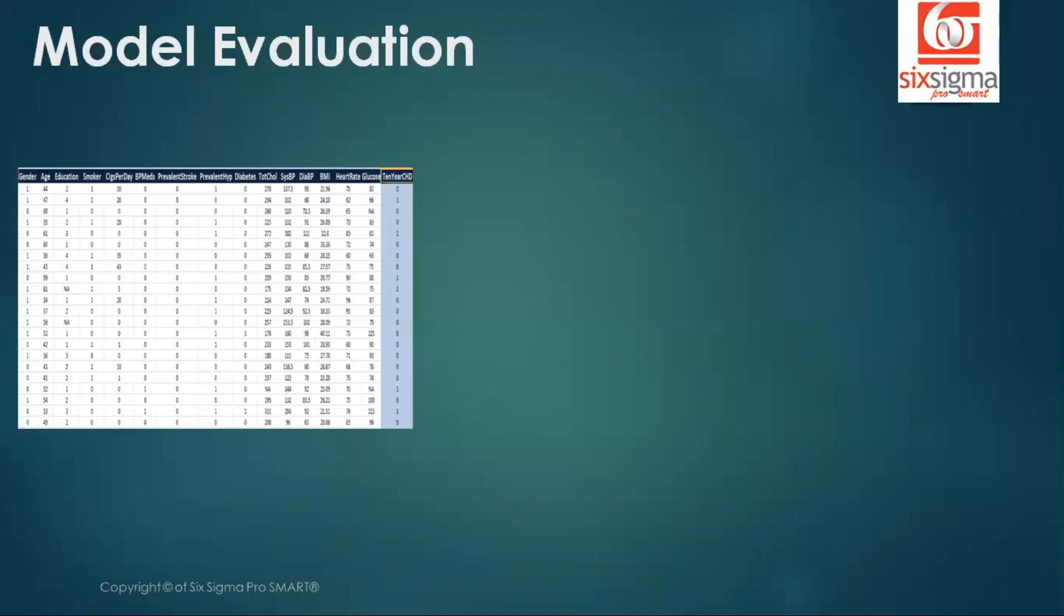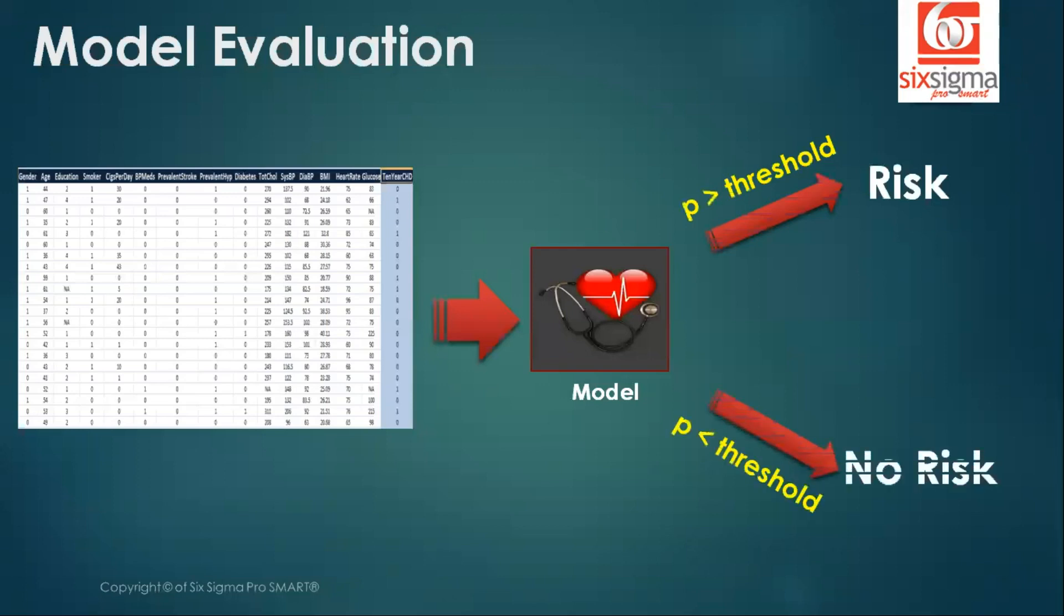So now, with the help of this, we have prepared something called as a model. And now, when we get these attributes for a new person, that is for a person whom the model has not really evaluated in the past, we pass these attributes through the model. Finally, if the probability estimated by the model is greater than the threshold, we will say that it's a case of potential risk in a 10 years time frame. And if the probability is less than the threshold, we will declare it as no risk.